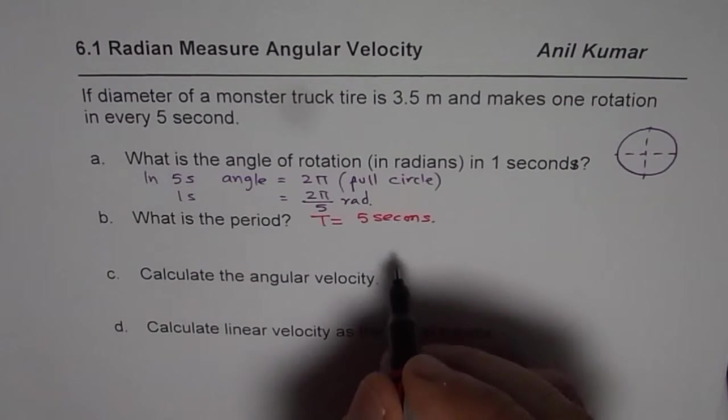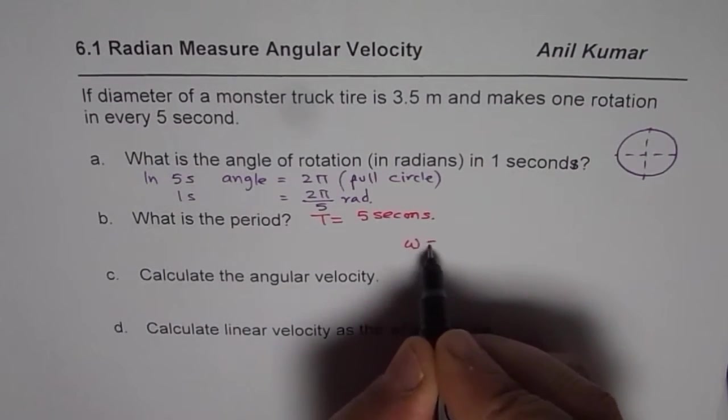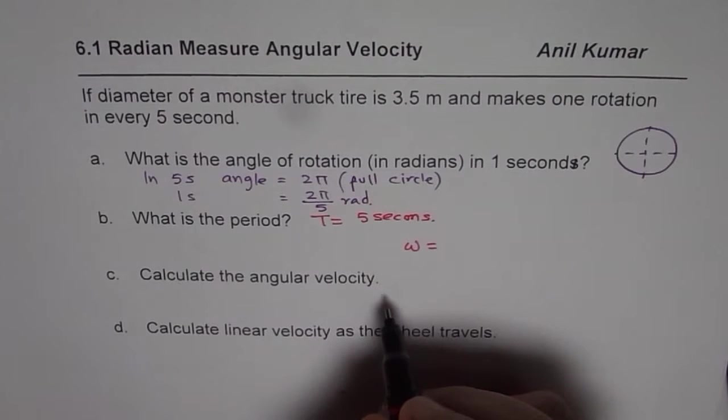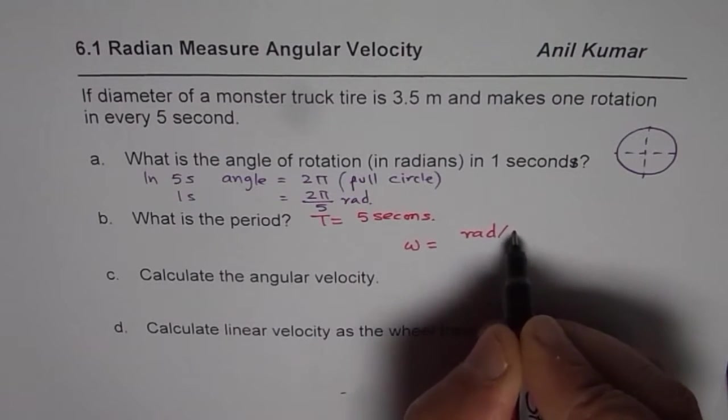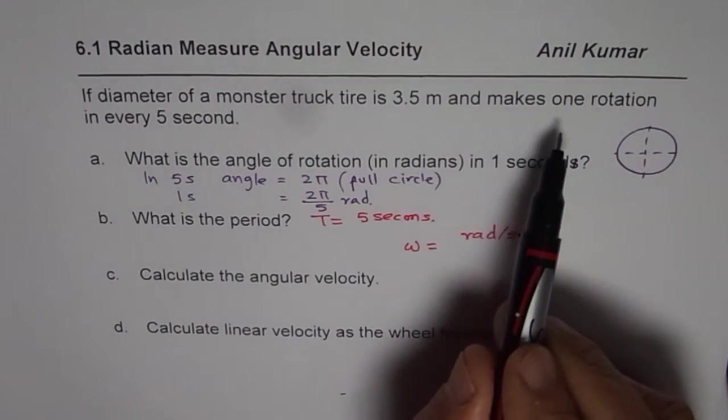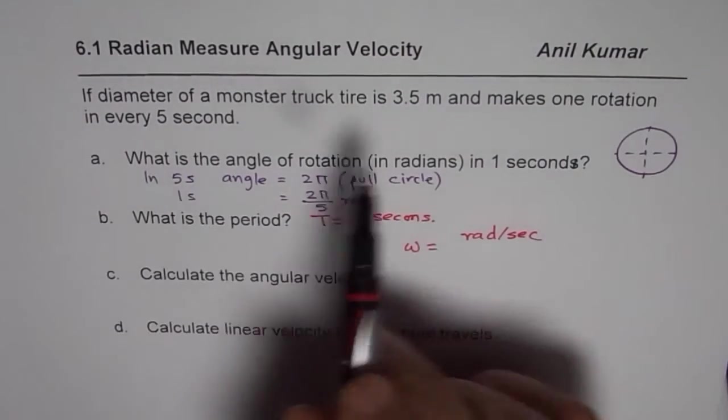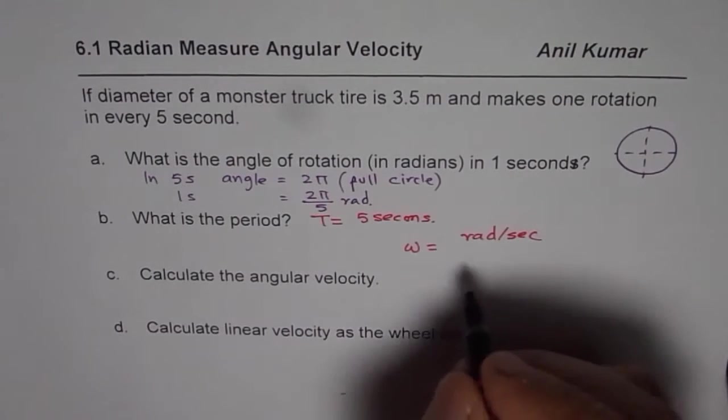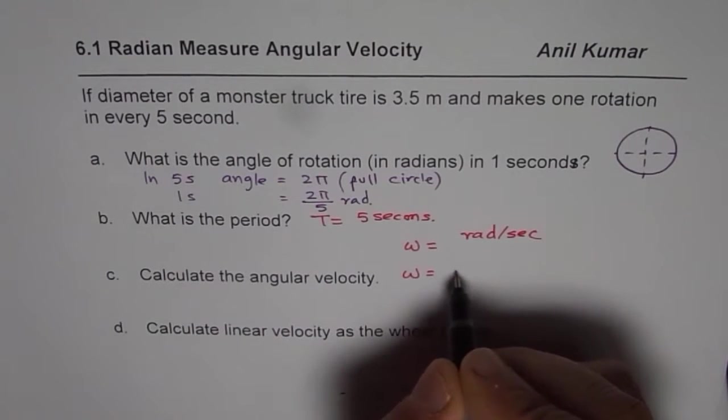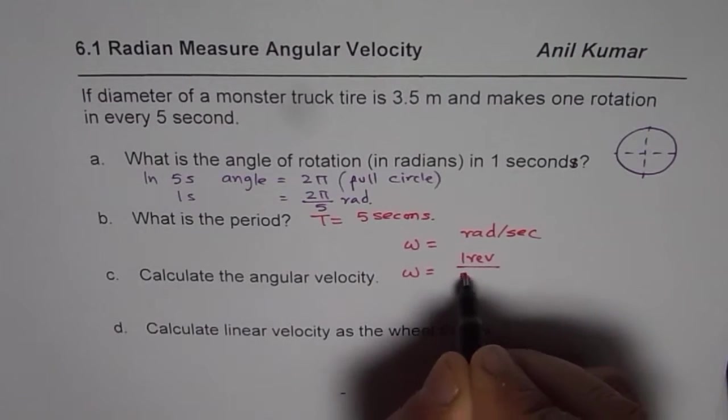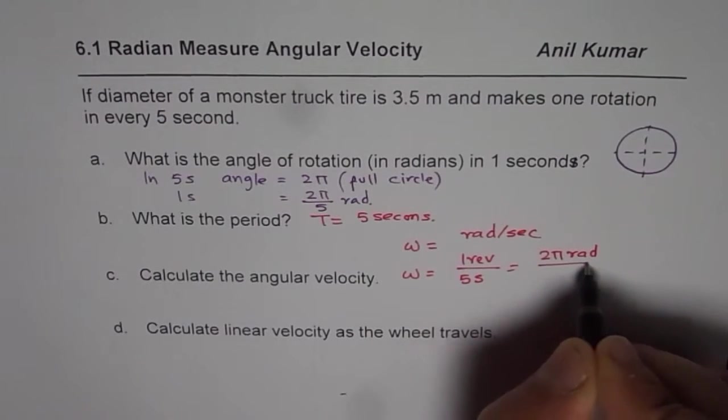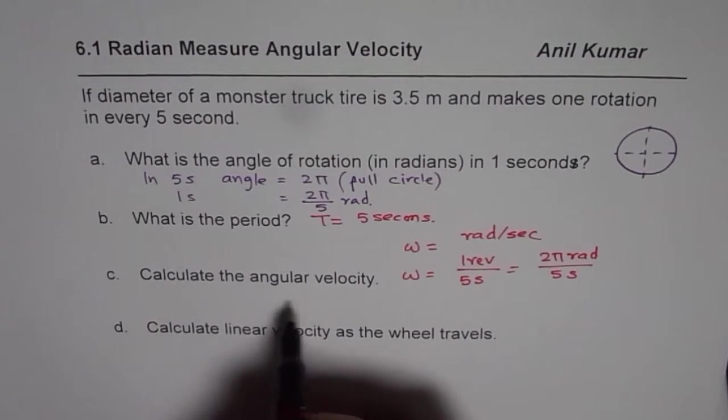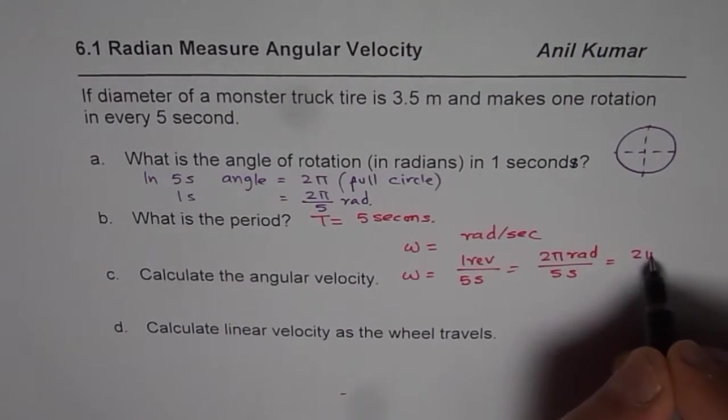Calculate the angular velocity. Now, angular velocity omega is, you can calculate in radians per second or revolutions per second. So we will calculate angular velocity in radians per second. In this case, what we see is that there is one rotation in five seconds. So in one rotation, how much angle do we cover? We say omega equals to one revolution in five seconds. One revolution is two pi radians. And we have five seconds. Therefore, the angular velocity is two pi over five radians per second.